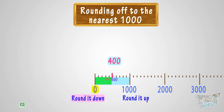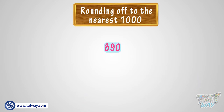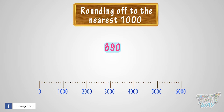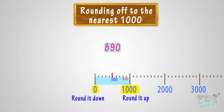400 is rounded down to 0. Let's take the next number. We have to round 890 to the nearest 1,000. See the number line. Where can you fit 890 on this number line? It is somewhere between 0 and 1,000. 890 is above or after the 500 mark, so we will round it up to 1,000.